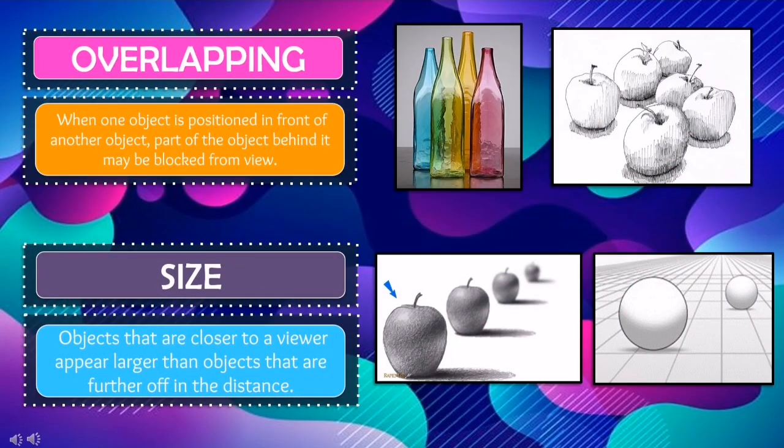Overlapping is when one object is positioned in front of another object. Part of the object behind it may be blocked from view.